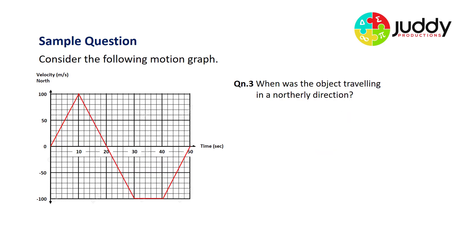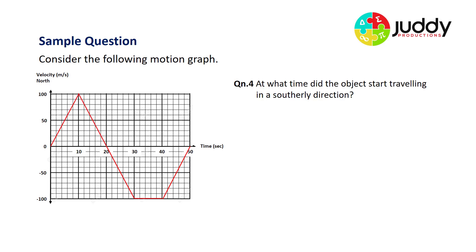Question three: when was the object traveling in a northerly direction? The area above the x-axis on a velocity-time graph indicates northerly displacement, and clearly the graph is above the x-axis from 0 to 20 seconds. Question four: at what time did the object start traveling in a southerly direction? The section below the x-axis represents southerly displacement, occurring from 20 to 50 seconds — so southerly travel first occurred at 20 seconds.